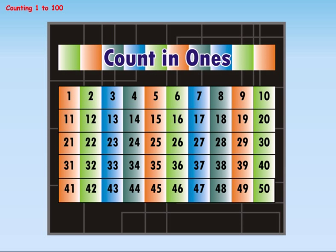Count in ones: 1, 2, 3, 4, 5, 6, 7, 8, 9, 10, 11, 12, 13, 14, 15, 16, 17, 18, 19, 20, 21, 22, 23, 24, 25, 26, 27, 28, 29, 30, 31, 32, 33, 34, 35, 36, 37, 38, 39, 40, 41, 42, 43, 44, 45, 46, 47, 48, 49, 50.